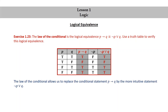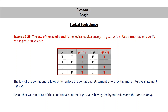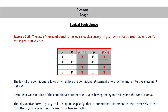The law of the conditional allows us to replace the conditional statement p implies q by the more intuitive statement not p or q. Recall that we can think of the conditional statement p implies q as having the hypothesis p and the conclusion q. The disjunctive form, not p or q, tells us quite explicitly that a conditional statement is true precisely if the hypothesis p is false or the conclusion q is true or both.